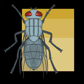In biology, a tagma is a specialized grouping of multiple segments or metameres into a coherently functional morphological unit. Familiar examples are the head, the thorax, and the abdomen of insects.